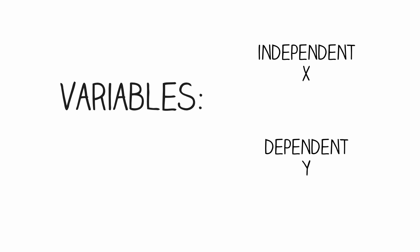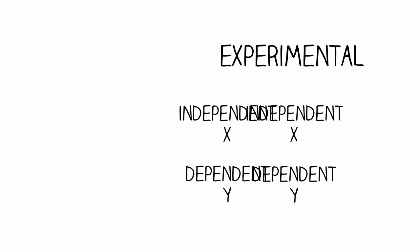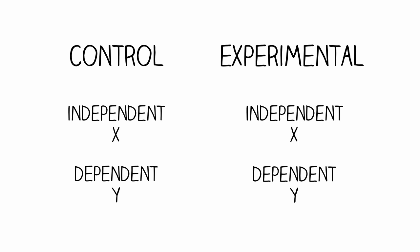A dependent variable is something that we want to measure as an outcome. In an experiment, we manipulate the independent variable by creating a control condition, which is basically no manipulation, and an experimental condition, where we have manipulated something.